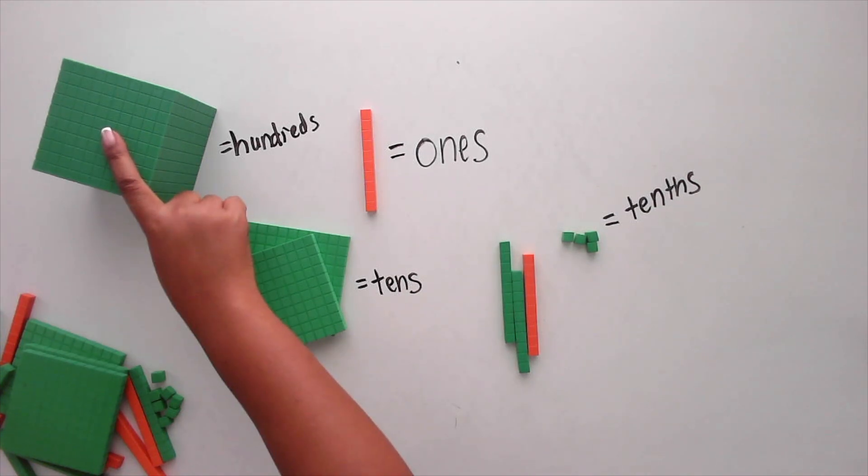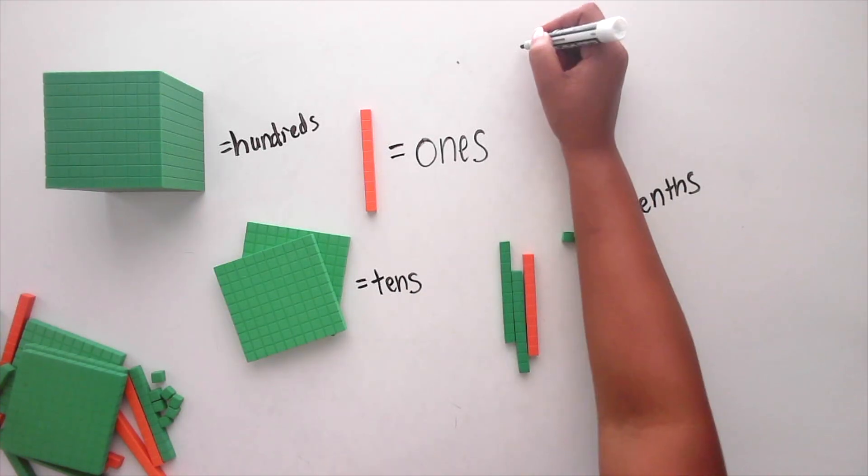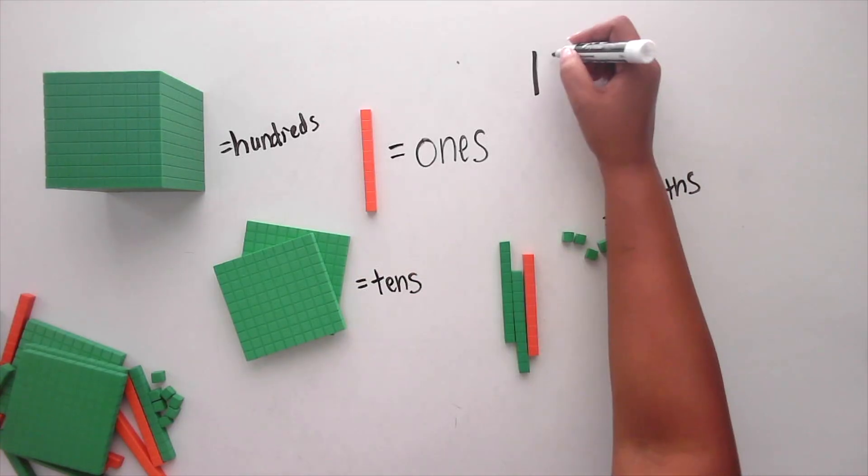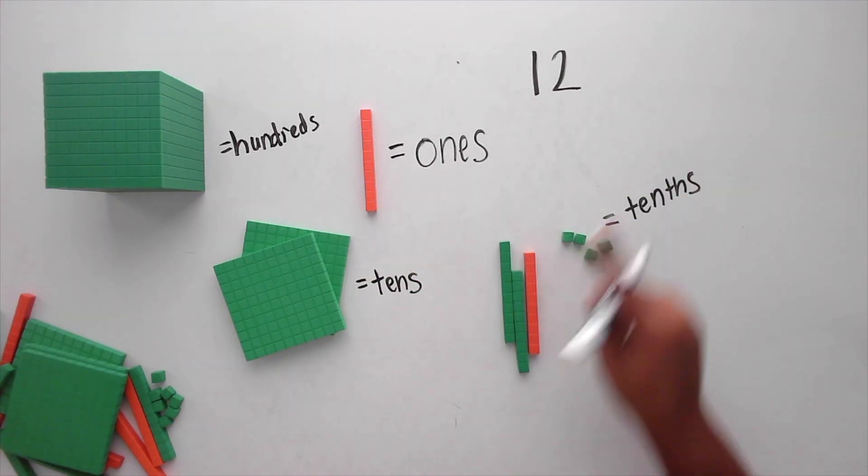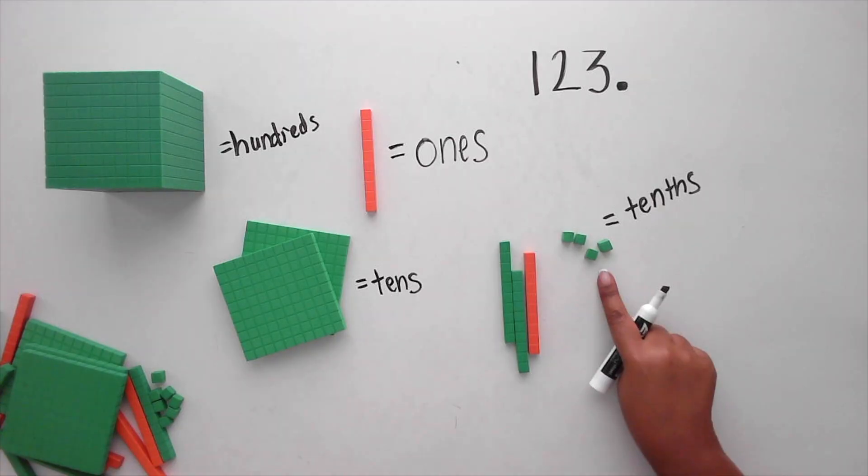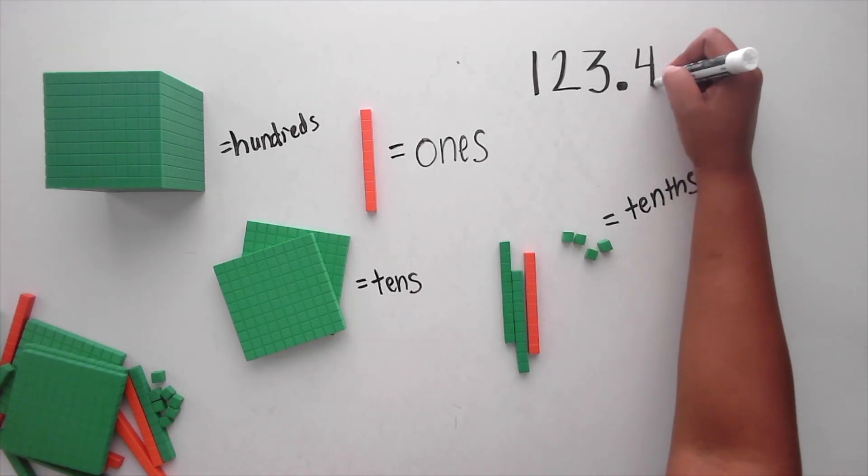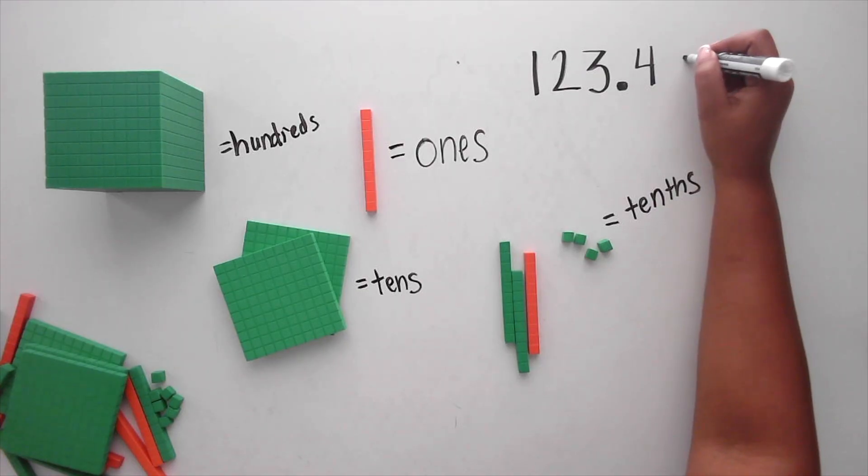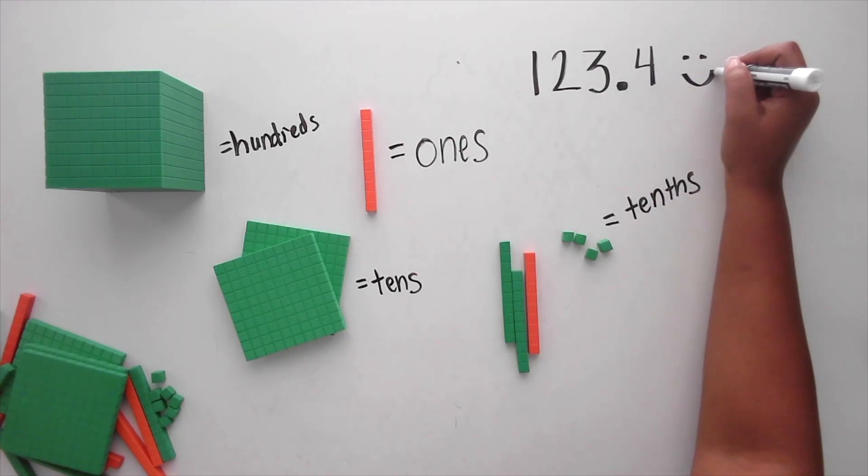In total, there is one hundred, two tens, three ones, and four tenths. One hundred twenty-three and four tenths.